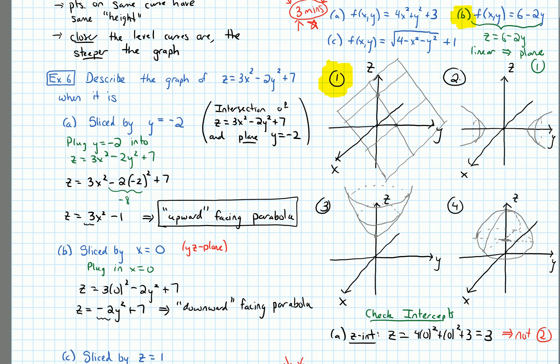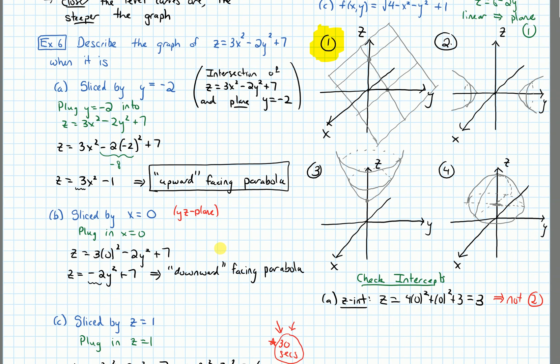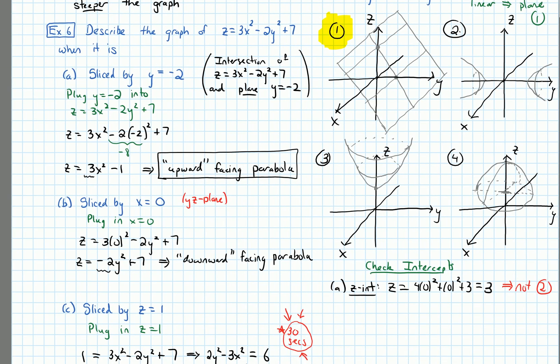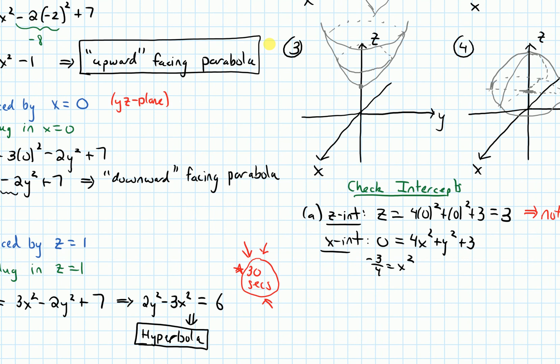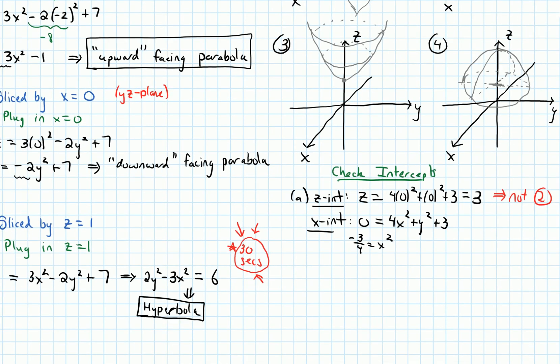Let's do the other intercepts. For x intercept, I'm going to need to set Z equal to 0 and the y equal to 0. So we'll get 0 equals 4x squared plus y squared plus 3. And if we simplify this and rearrange, we'll get negative 3 fourths equals x squared. I have x squared equals to a negative number.